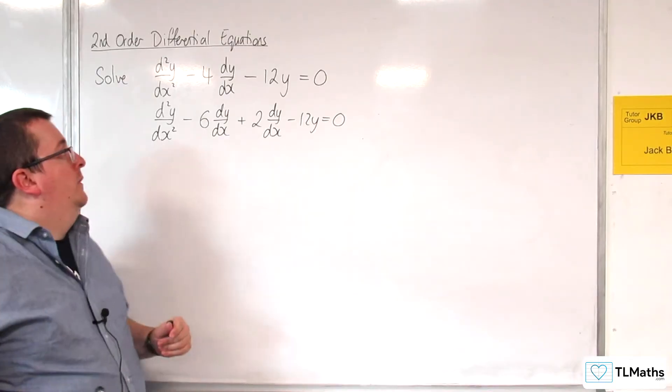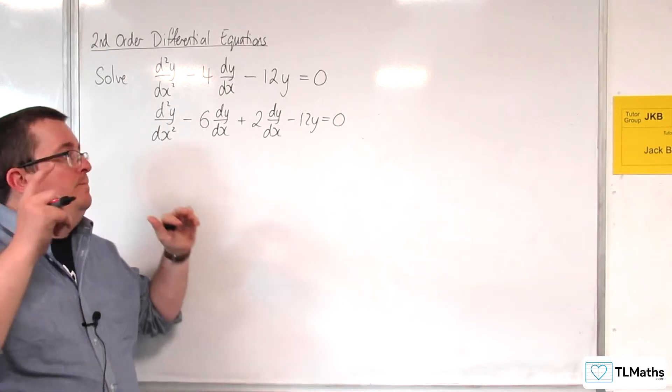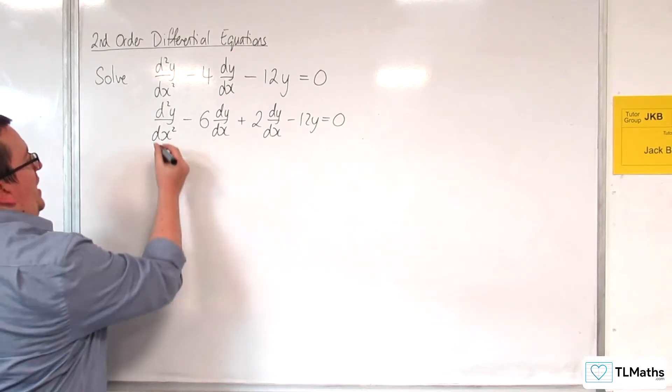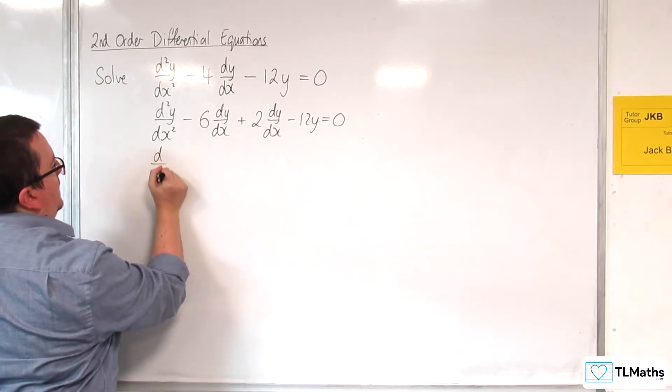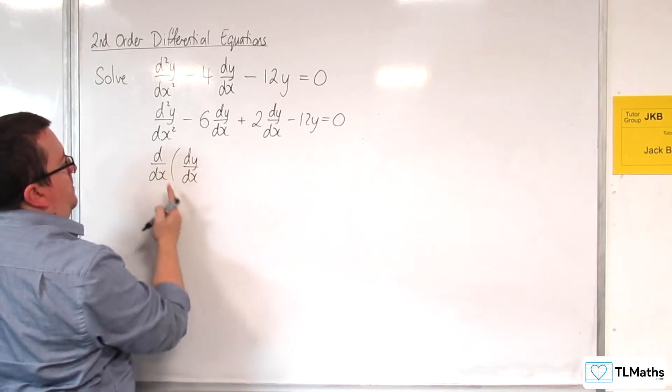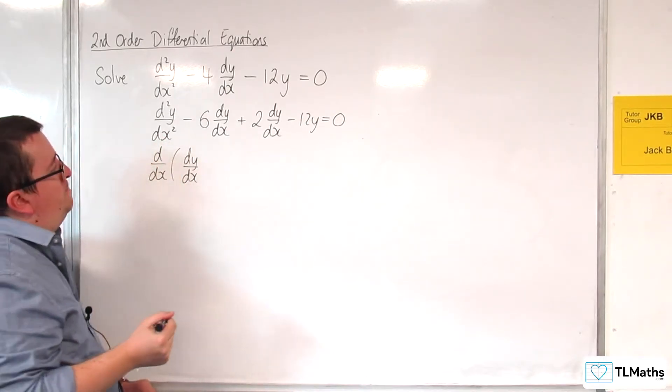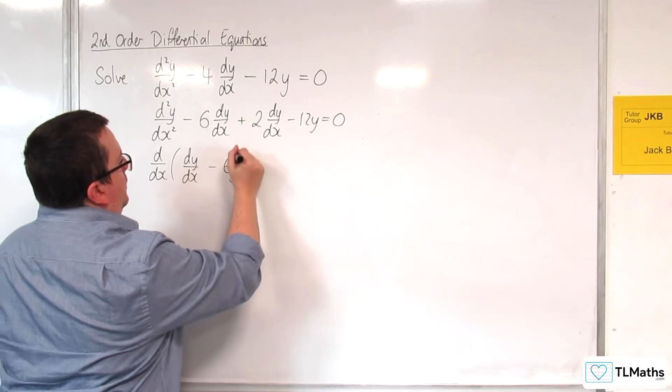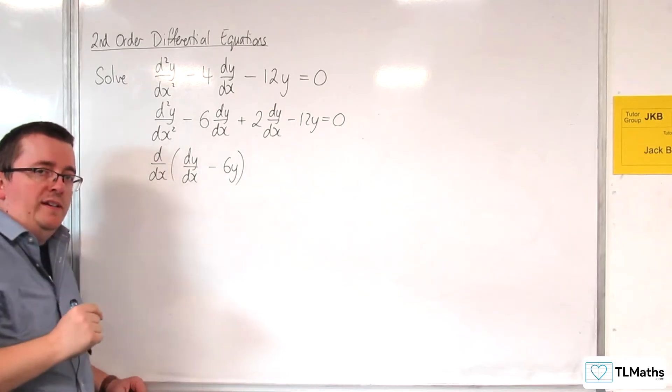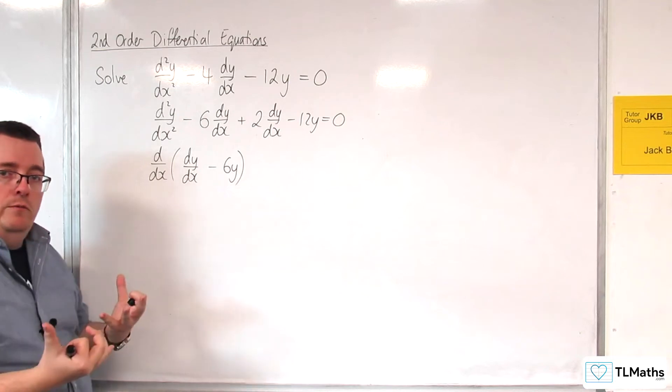Now, I'm not going to factorize the left-hand side into two bits. Instead, I'm going to identify that the first two terms are the same as writing d/dx of dy/dx - 6y, because if I differentiate dy/dx, I get d²y/dx², and here I would have -6y, because if I differentiate this, I get -6dy/dx. So those two terms, I've pulled the derivative out, effectively.